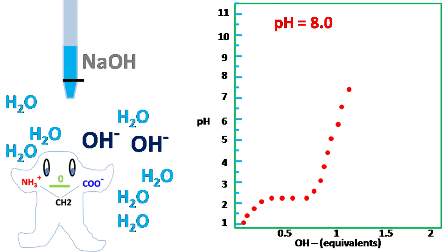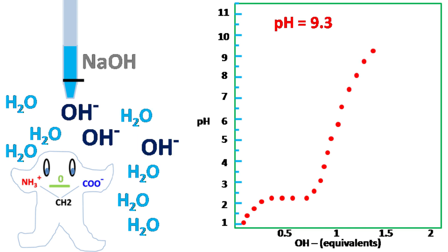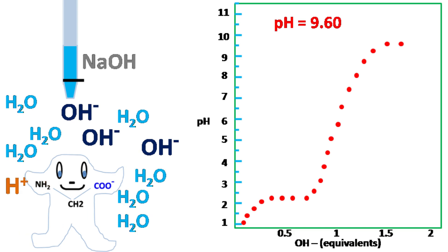Now, further addition of OH minus ions causes rise in pH above 7. At pH 9.6, the ammonium group of glycine starts donating its H plus ion.